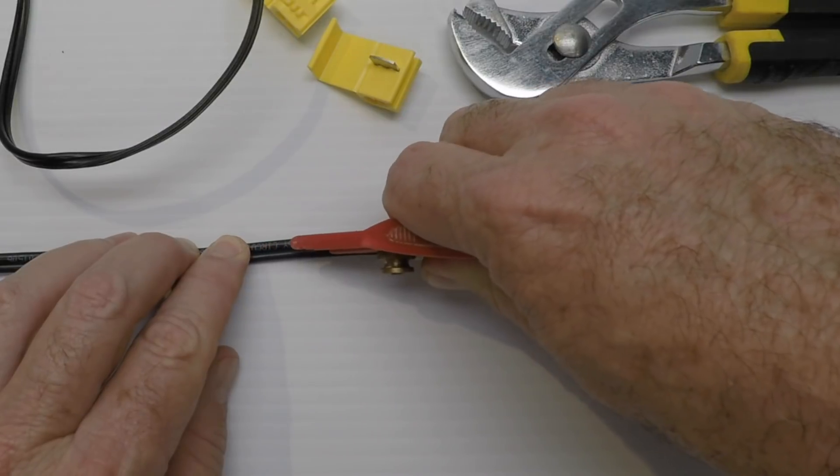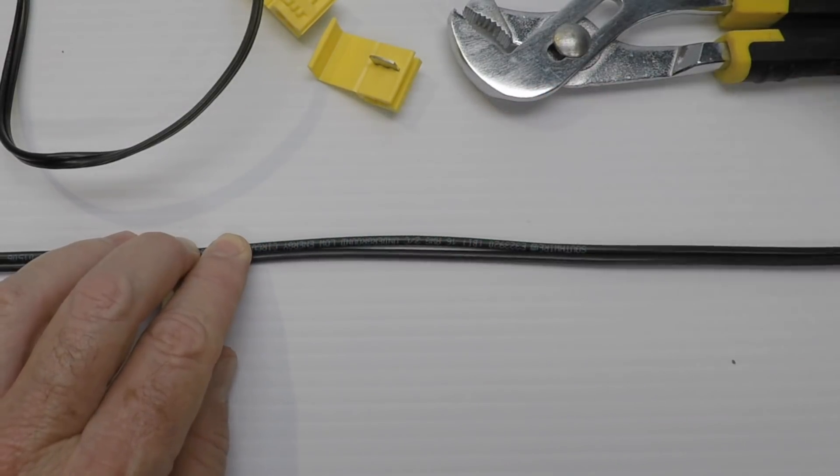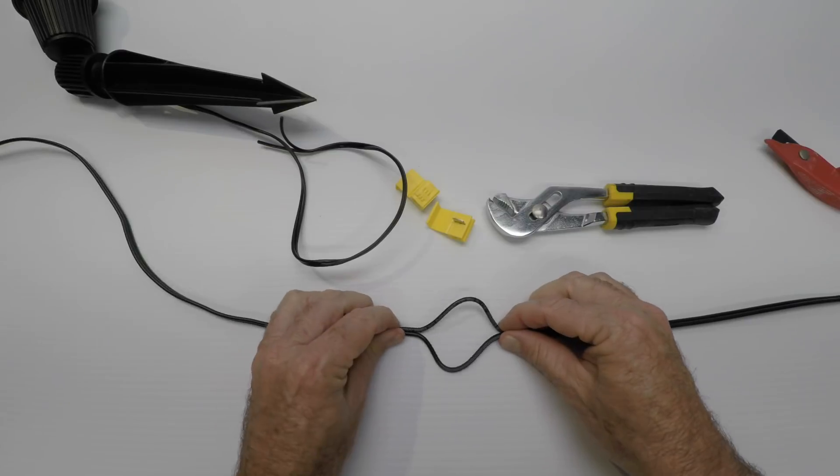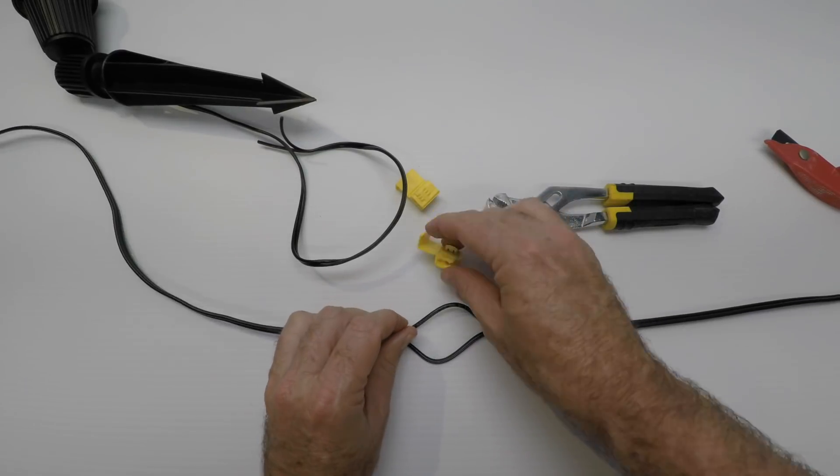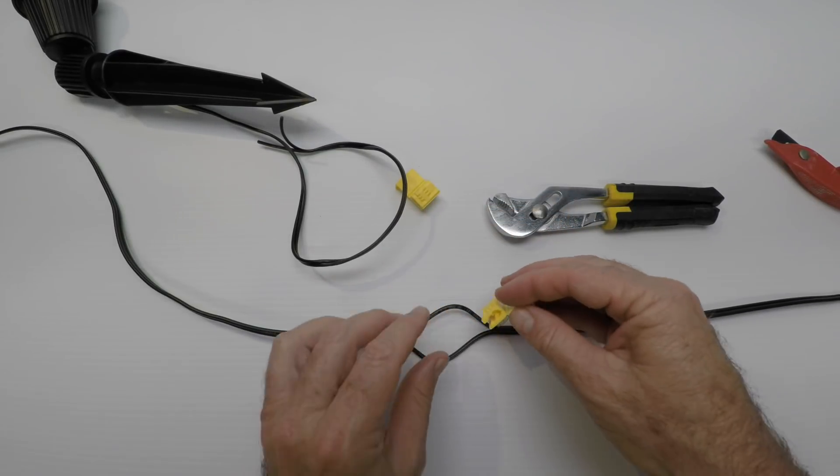Take your razor knife and run it down here in the middle between the two leads, just pull it apart. You don't have to cut it with the displacement connector - that's really a good thing.